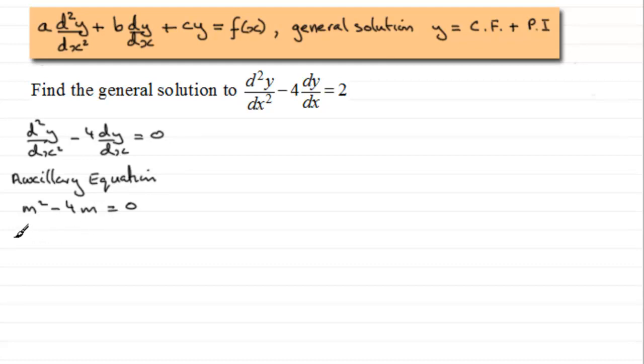We factorize, and we've got m as a common factor, and then you've got m minus 4, and that equals zero. So we've got two roots. Those roots are m = 0 or m = 4.